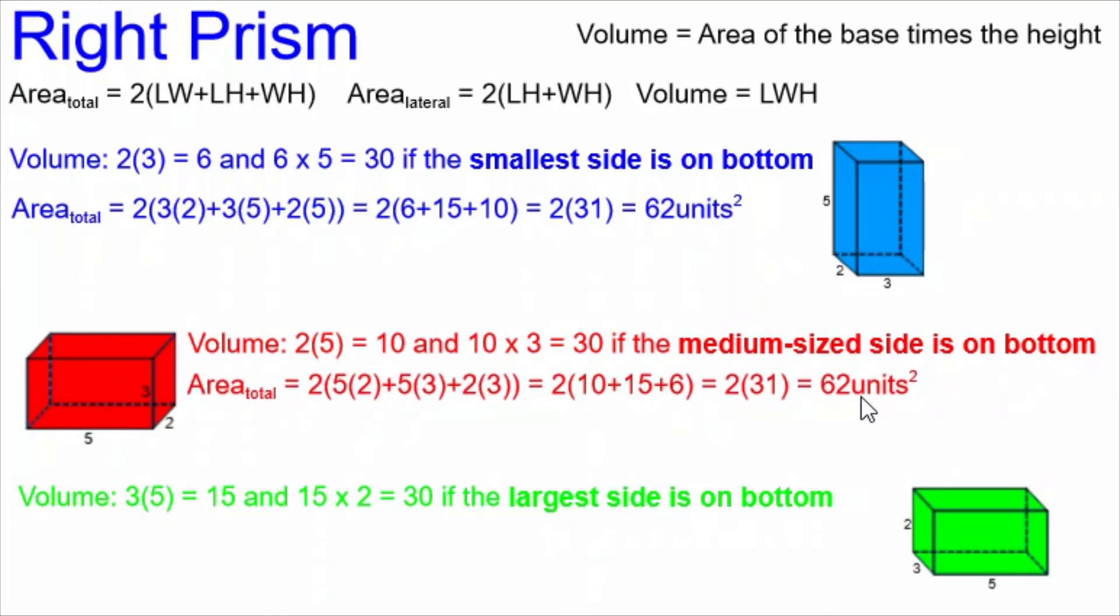If we have the medium sized side on the bottom, we still end up with 2 times 31 and 62 units squared.